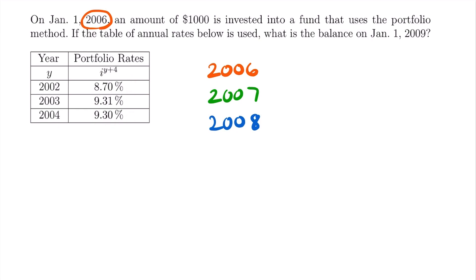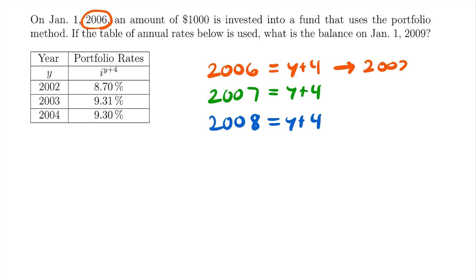To figure out which portfolio rates correspond to each of these years, we set each year equal to Y plus 4 and solve for Y by subtracting 4. For 2006: 2006 − 4 = 2002. For 2007: 2007 − 4 = 2003. For 2008: 2008 − 4 = 2004. So for 2006 we use the portfolio rate for 2002 (8.7%), for 2007 we use the rate for 2003 (9.31%), and for 2008 we use the rate for 2004 (9.30%).